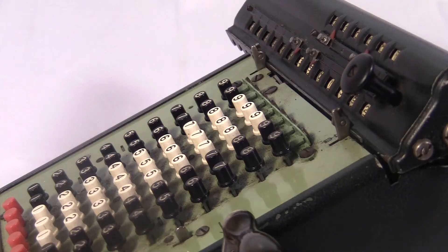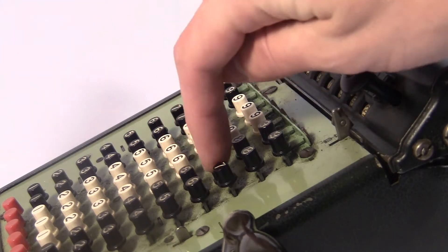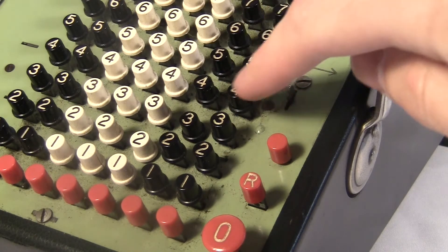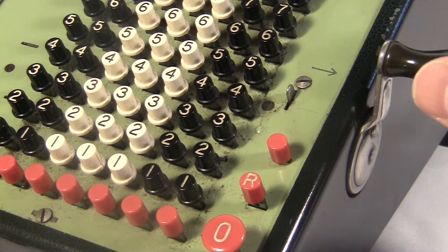The digit keys will stay pressed down until you turn the crank, so you'll be able to see which digits you pressed, and you can change them around if you hit the wrong one. Once you crank it, they all pop up, so you can type in your next number.